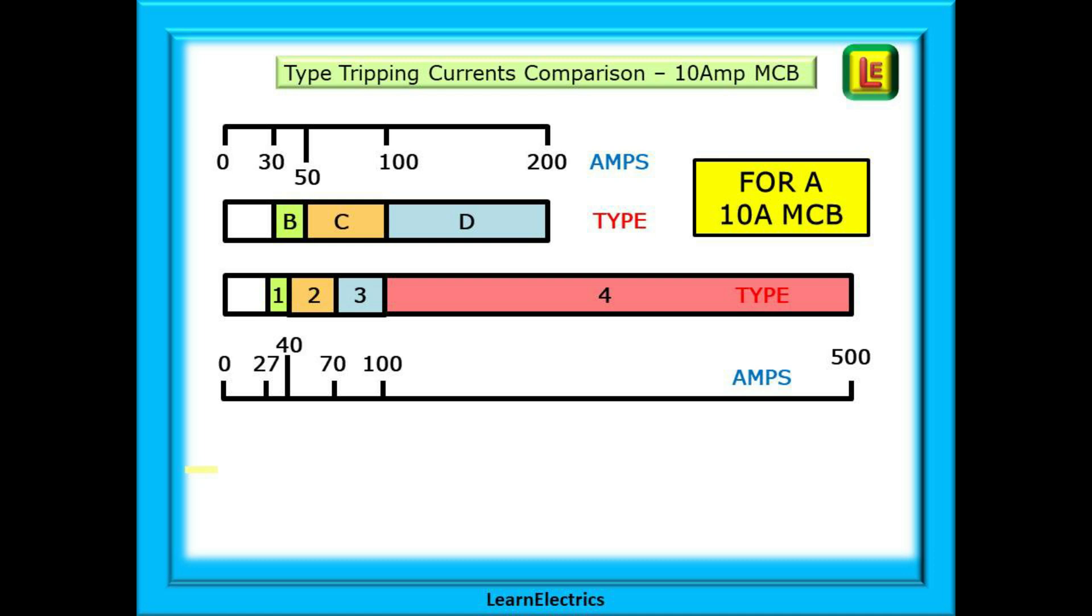Looking at the B, C, D row, the white area is the area of not tripping. So between 0 amps and 30 amps a B type will not trip. Between 30 amps and 50 amps a B type 10 amp breaker is in the ready to trip zone and at 50 amps, that is to say at 5 times 10 amps, it will definitely have tripped.